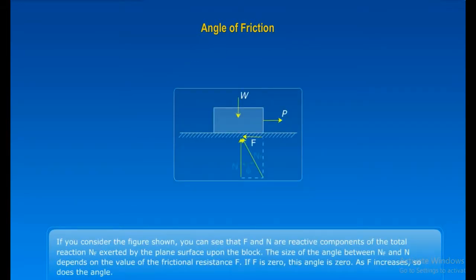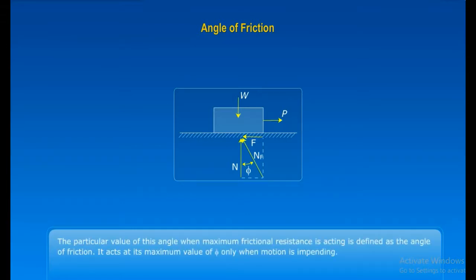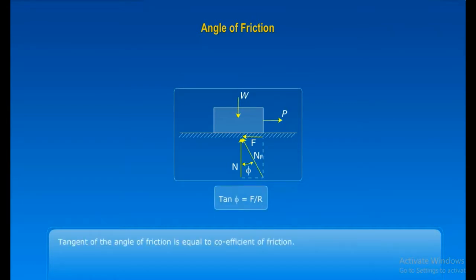If you consider the figure shown, you can see that F and N are reactive components of the total reaction NF exerted by the plane surface upon the block. The size of the angle between NF and N depends on the value of the frictional resistance F. If F is zero, this angle too is zero. As F increases, so does the angle. The particular value of this angle when maximum frictional resistance is acting is defined as the angle of friction. It acts at its maximum value of F only when the motion is impending. Tangent of the angle of friction is equal to the coefficient of friction.